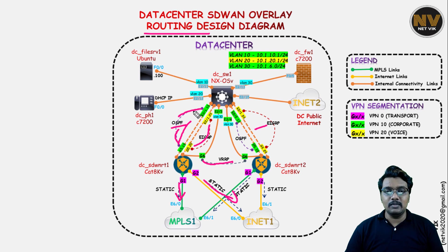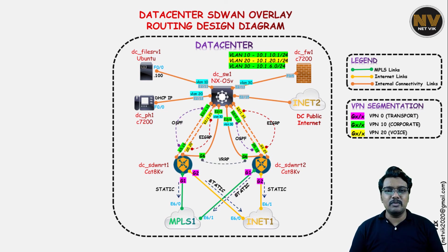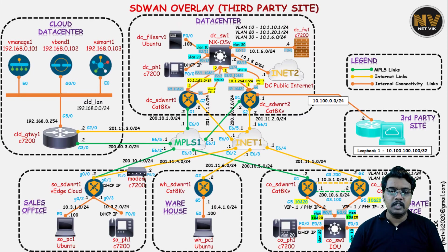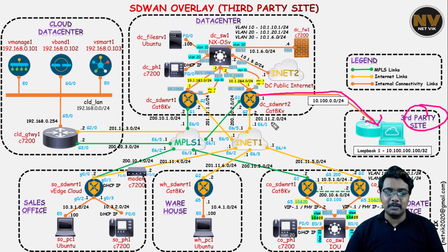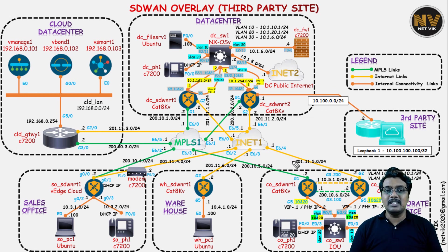All these diagrams are also available for all other sites — starting from sales office, warehouse, and corporate office. One final diagram: this is the same topology we have discussed but with an extension leg to a third-party site. This third-party site is introduced to showcase specific scenarios in later sections, like doing NAT when traffic is exiting to a third-party site. We will discuss that connectivity in detail in those specific videos. I leave it up to you to explore all the remaining diagrams available in the shared file — please do go through and reach back to me via the comment section if you have any queries.